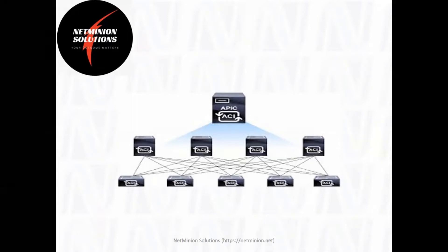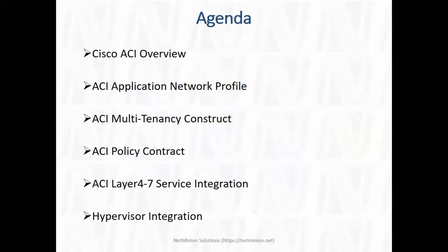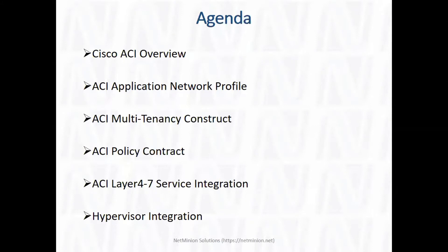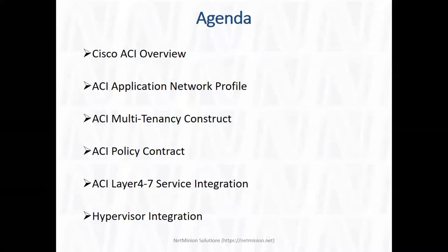The course will start by discussing why we bring ACI when we've been doing traditional networking with Nexus 7K, 5K, 2K, or Catalyst switches for 10 or more years. Then we'll talk about the advantages ACI brings. We'll gradually move into fabric discovery — how the APIC discovers the fabric, how the whole fabric is built, what the prerequisites are, how to go into the wizard and do the APIC configurations, how to access the APIC, and how to navigate the dashboard.